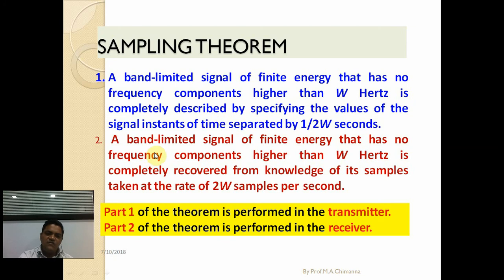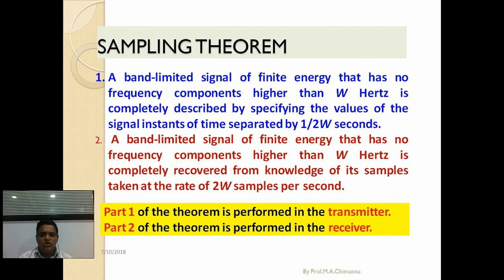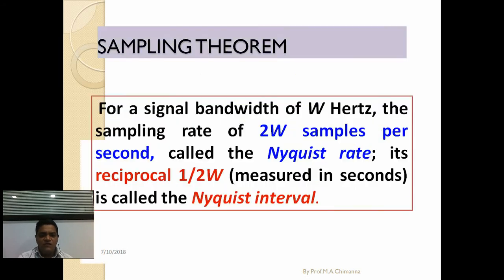For the receiver side, Part 2 is applicable: a band-limited signal of finite energy that has no frequency component higher than W hertz is completely recovered from the knowledge of its samples. The modulated signal is at twice that of the sampling frequency, which is applicable for the receiver side.